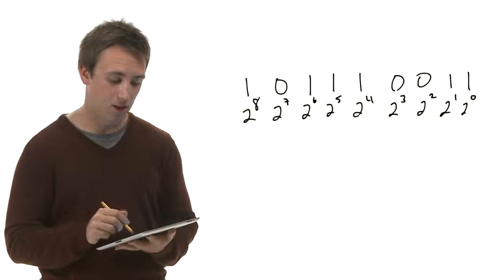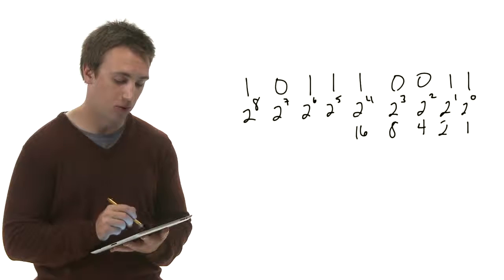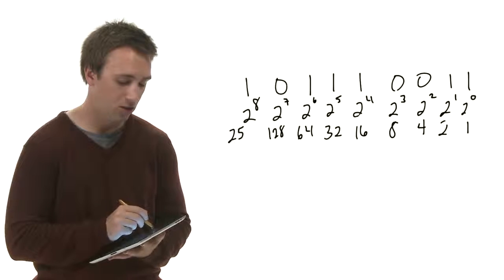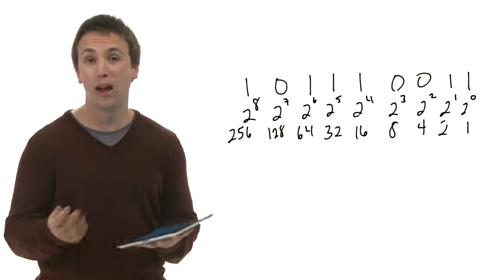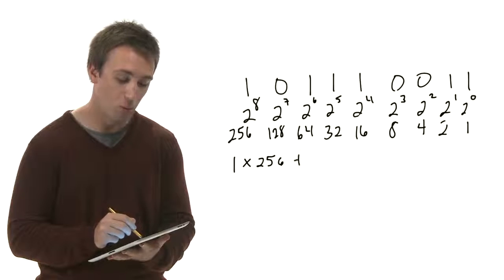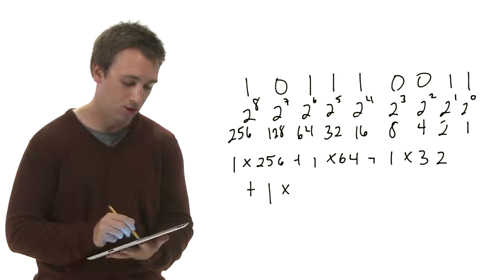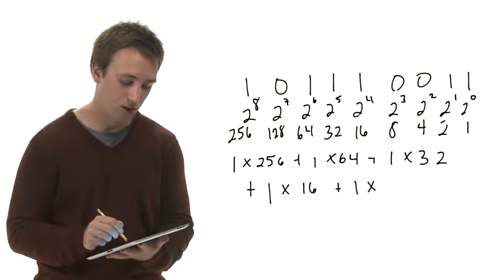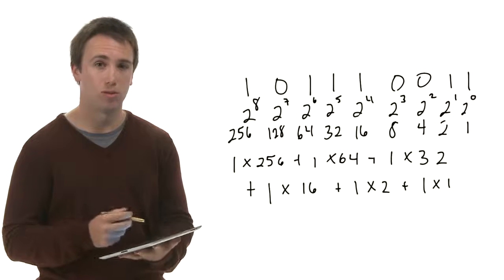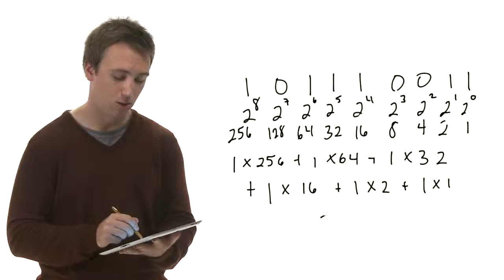Now if we do the math, that's the 1's place, the 2's place, the 4's place, the 8's place, the 16's place, the 32's place, the 64's place, the 128's place, and finally the 256's place. So now, if we start multiplying everything together, we see we have 1 times 256, plus 1 times 64, plus 1 times 32, plus 1 times 16, plus 1 times 2, and 1 times 1. So if we sum all of that together, we get 256 plus 64 plus 32 plus 16 plus 2 plus 1, all for a grand total of 371.